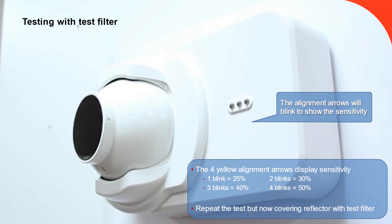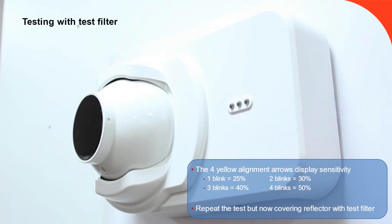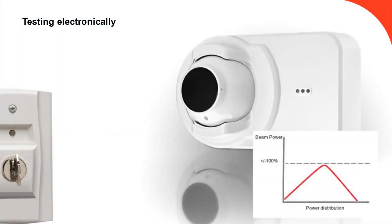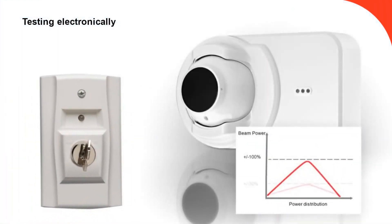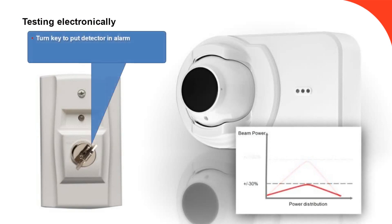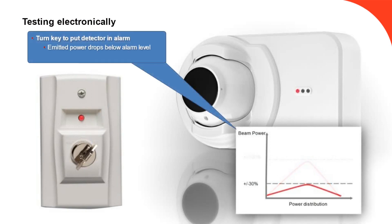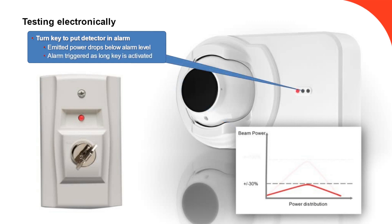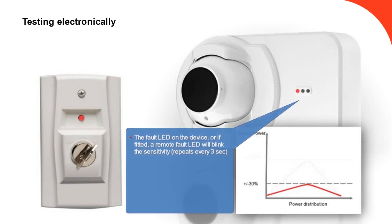Testing for faults can be done by covering the lens with a piece of paper; a fault should be generated within 60 seconds. The remote test key switch drops the emitter power, simulating an obscuration fire event. This is maintained for as long as the key is turned. Once reset, the device will run through its notification flash sequence at the detector, or at a dedicated remote fault LED, to indicate the sensitivity setting.